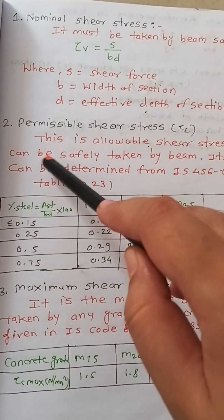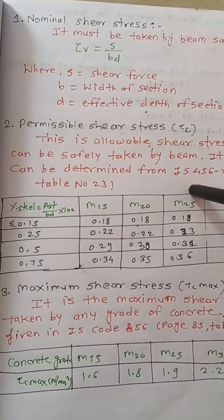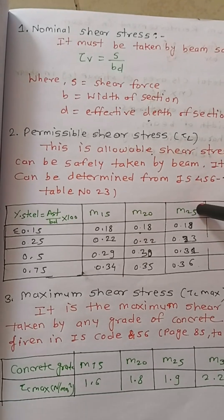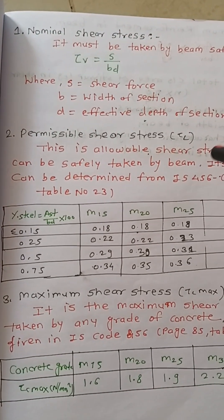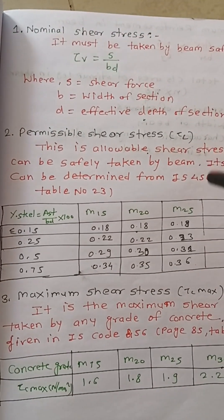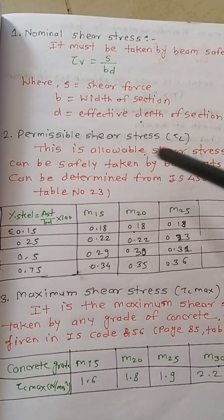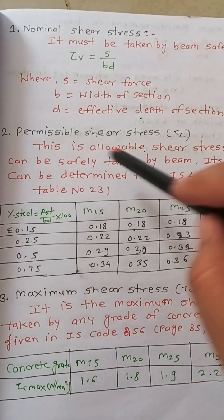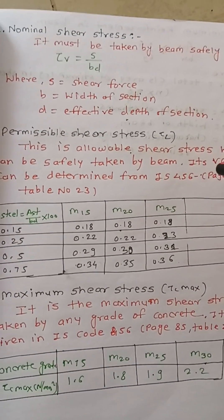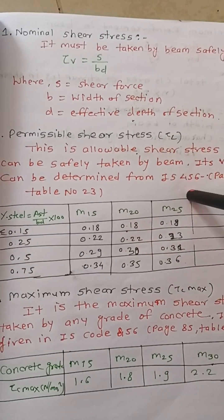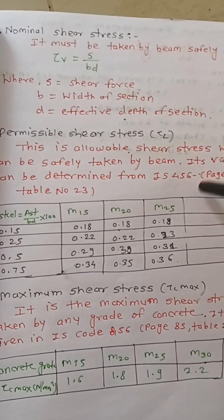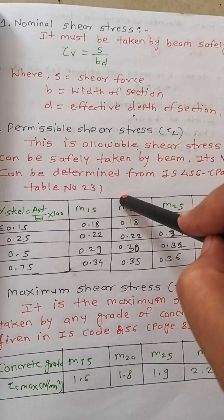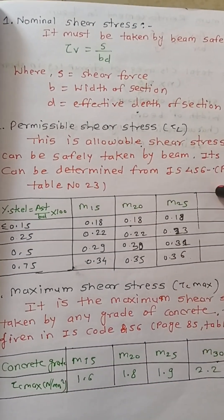Permissible shear stress is denoted by τc. It is the allowable shear stress given by the IS code, or the stress that can be safely taken by the beam. Its value can be determined from IS 456, page 84, Table Number 23.